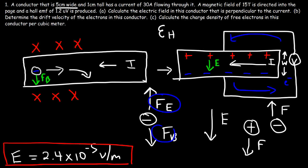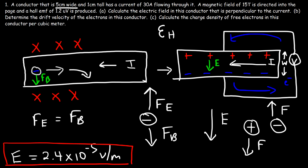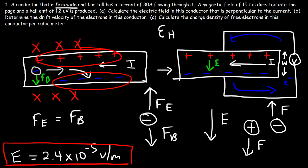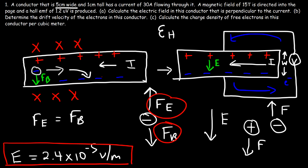When these two forces are equal, the EMF generated is in a state of equilibrium. As the electrons travel to the right, there is a buildup of negative charge and positive charge. This doesn't continue forever — the magnetic force is fixed, but the electric field increases as the charge separation increases. Eventually the electric field gets strong enough that these two forces are equal. At that point, electrons no longer drift toward the bottom; they just keep flowing in the original direction.